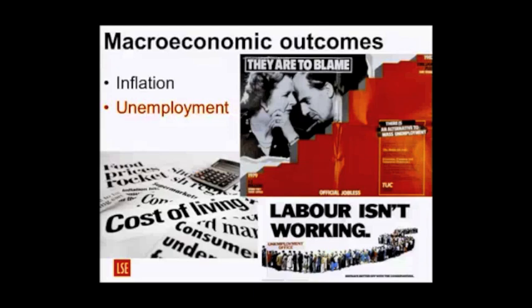This is Saatchi and Saatchi's 1979 election campaign poster for the Conservatives: 'Labour Isn't Working.' I think we had 1.3 million unemployed when Thatcher took over. By 1982, we have over 3 million registered unemployed. The definitions change over the 1980s, so later we'll use International Labour Organization definitions rather than the UK government's.